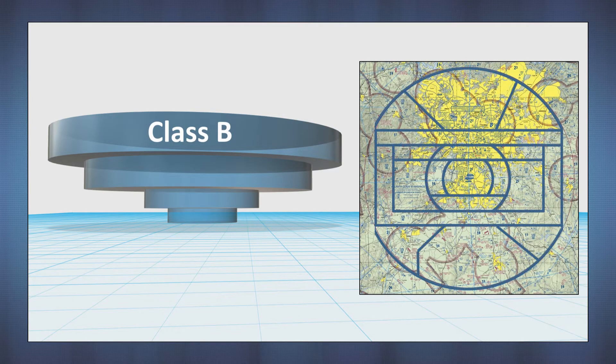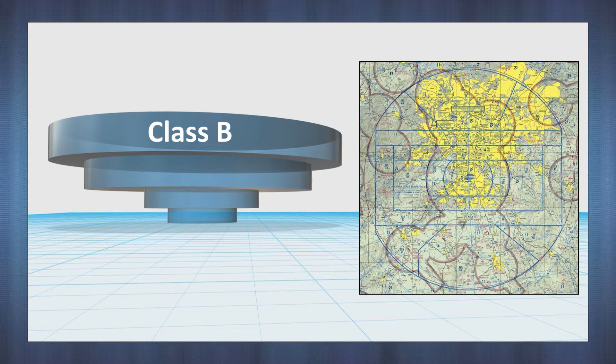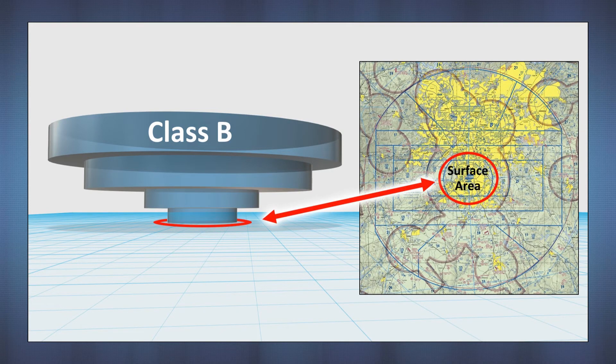On the chart, the airspace is shown in solid blue outlines. In an ideal world, each layer would be round, but as you see here, some are rectangular and others only have rounded ends. A central core called the surface area touches the ground. All other layers are stacked in shelves whose floors are a fixed height above the ground.